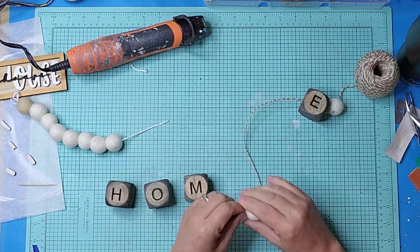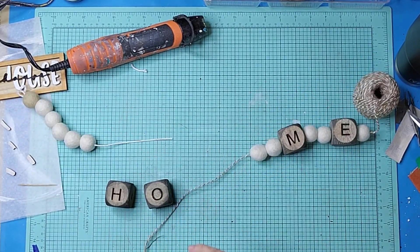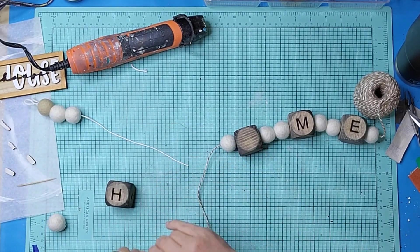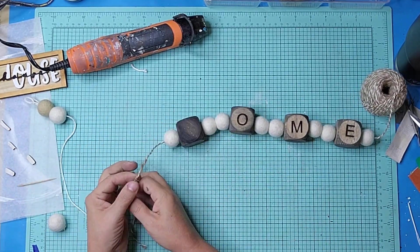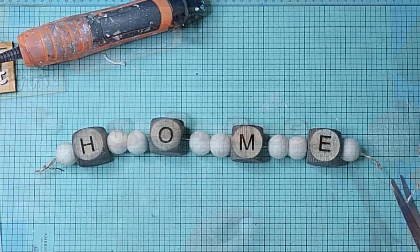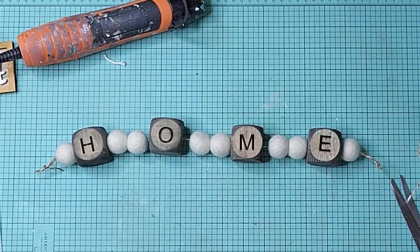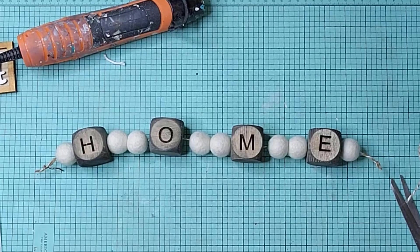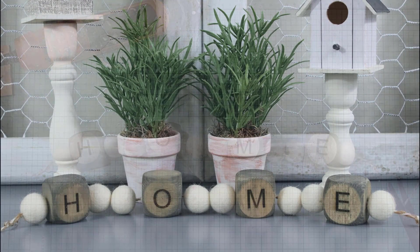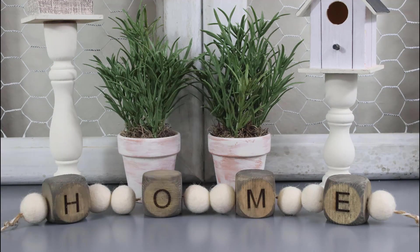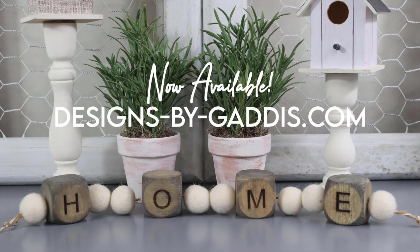I strung the blocks and some felt beads I had gotten from my Amazon store onto a piece of string and tied a knot at the ends. And just look at how adorable. Let me know what you think of these adorable little blocks in the comments. You can find these ready to add your own touch blocks to your decor by checking out my online store. You'll find a link in the description.